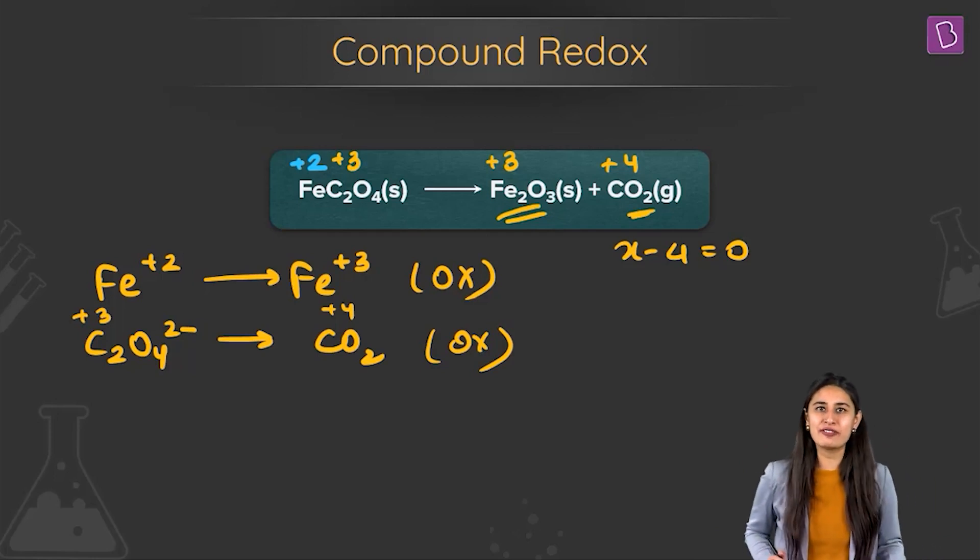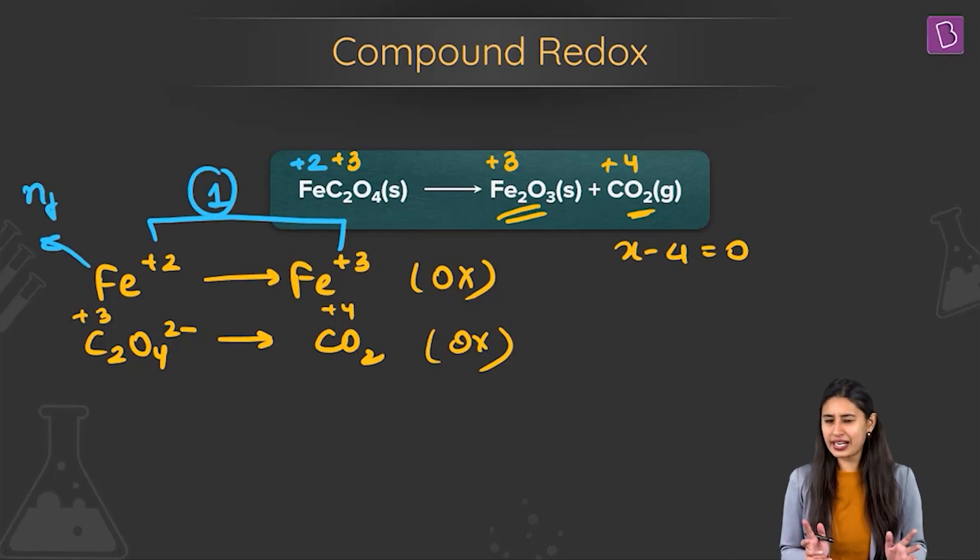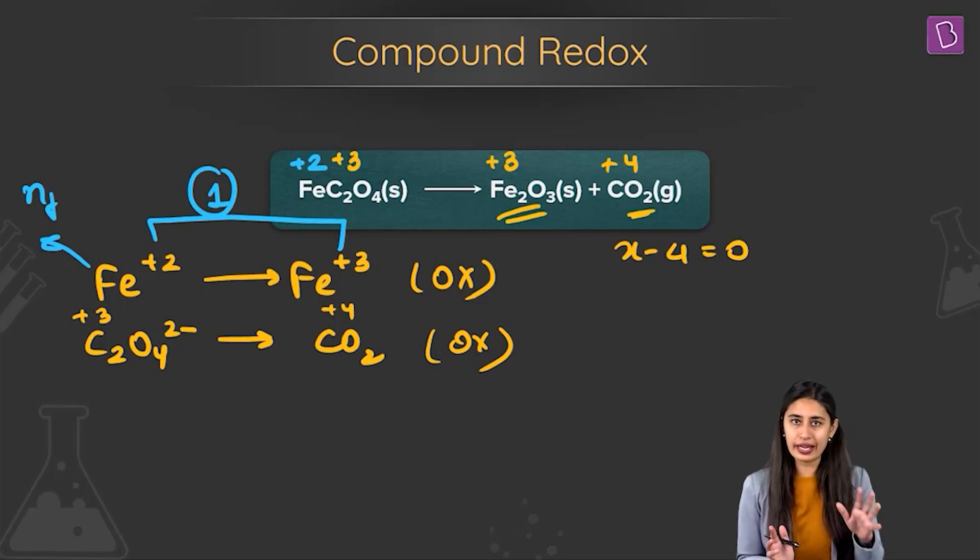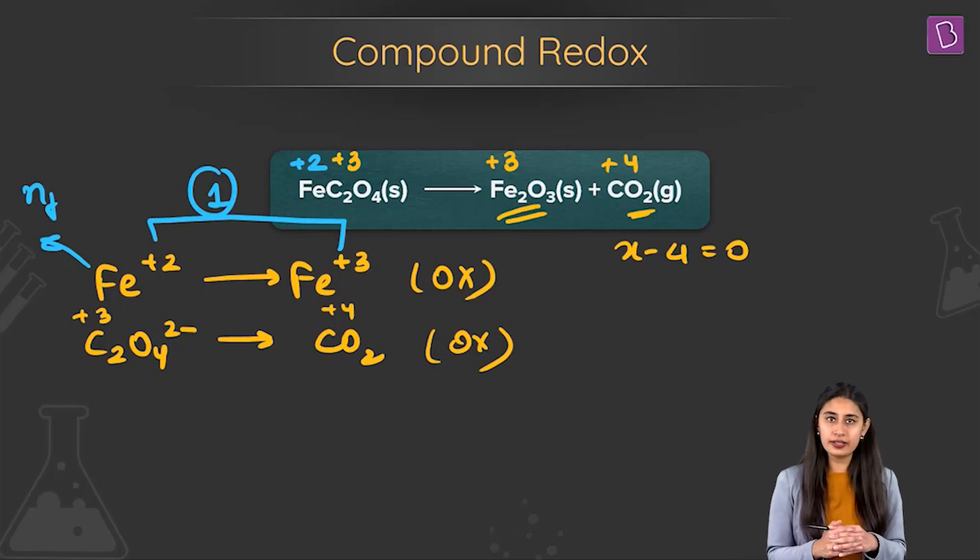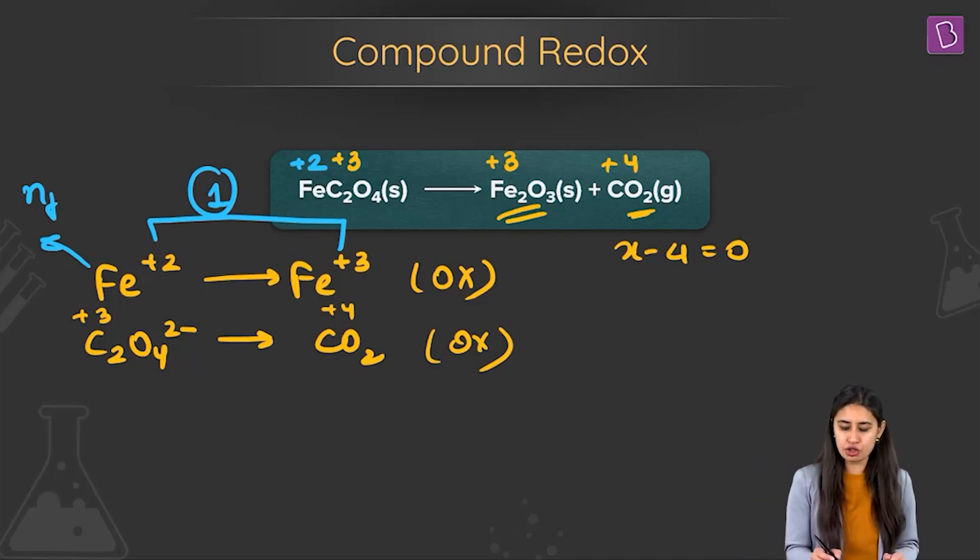Now how to find out n-factor for these kind of critical cases. What do I say? Plus 2 to plus 3, the difference is 1 since iron is 1. So n-factor of iron oxalate, like I told you, n-factor is found out with the help of an atom but is found for a compound. So n-factor of iron oxalate should have been 1 because 1 iron is present. So difference is 1 into the number of atoms of iron which is 1 only. So 1, should I call n-factor of iron oxalate as 1?